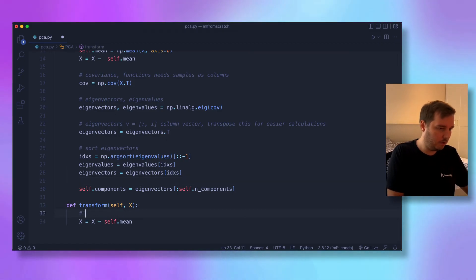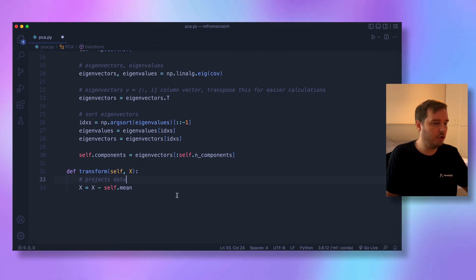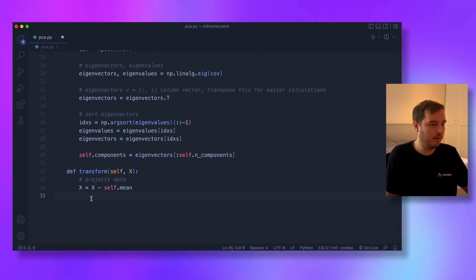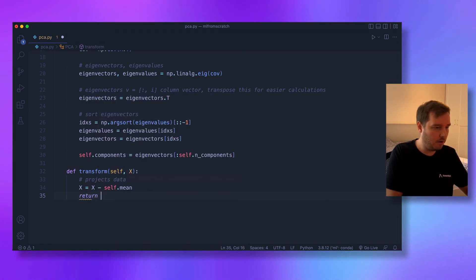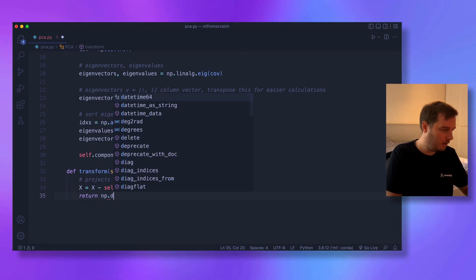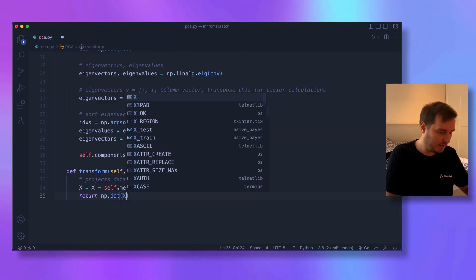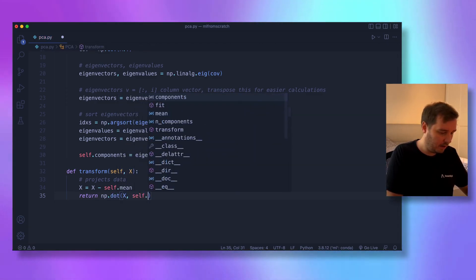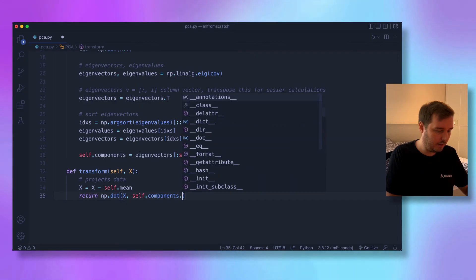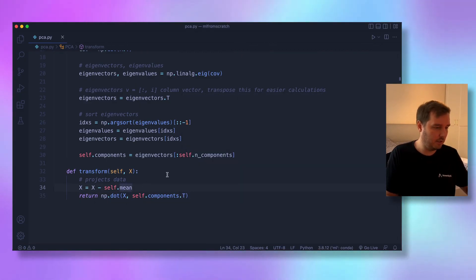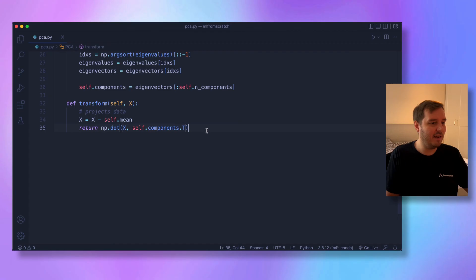In the transform method, we want to project the data. After mean centering, projection only means the dot product. So we return np.dot(X, self.components.T). We have to transpose this here. And this is all we need for PCA.